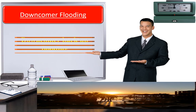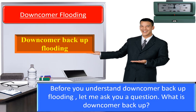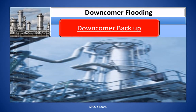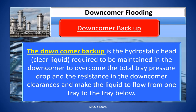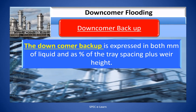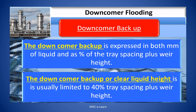First, we will discuss downcomer backup flooding. The downcomer backup is the hydrostatic head, or clear liquid height, required to be maintained in the downcomer to overcome the total tray pressure drop and the resistance in the downcomer clearances, making the liquid flow from one tray to the tray below. Downcomer backup is expressed in mm of liquid and as a percentage of the tray spacing plus the weir height, and is usually limited to 40% of tray spacing plus weir height.